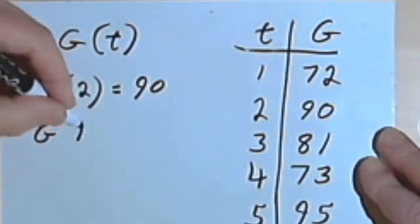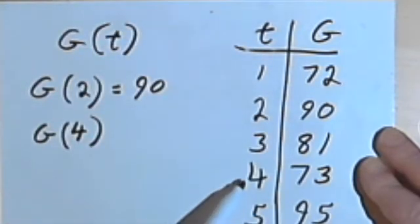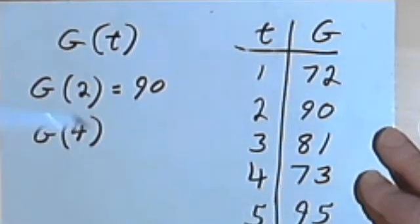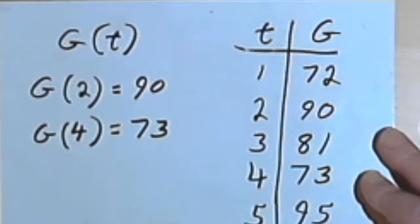If I want G of 4, I look down my input column until I get to the 4, and I find out that the corresponding output is 73. So G of 4 equals 73.